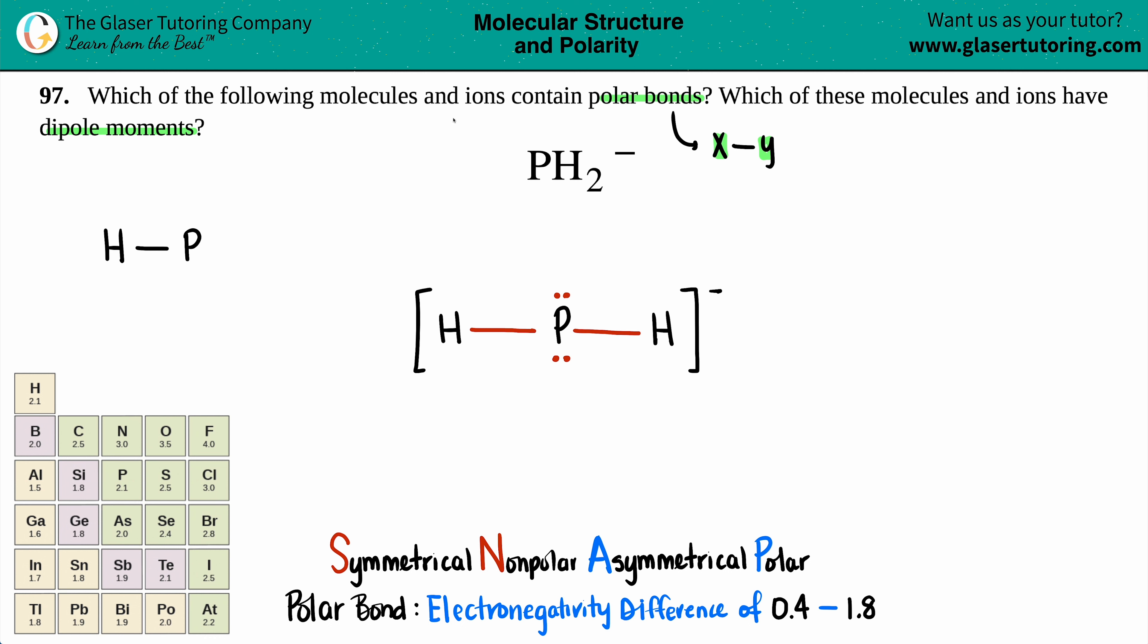Now, if you have polar bonds, just know that when you subtract those electronegativities, keep in mind that a difference just means subtraction. So if you know those electronegativity values, you could subtract them and you should be in the realm of 0.4 to 1.8.